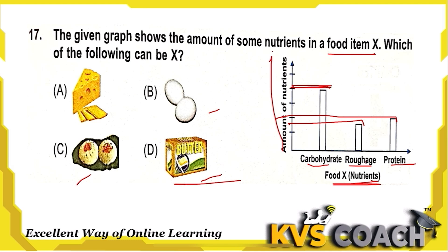Question 17: Butter has carbohydrates; egg has fats or protein; cheese has fats and protein. Looking at food X — idli — idli is made from rice flour, semolina, or urad dal, and is rich in carbohydrates, protein, and roughage. All three nutrients are present in it, so option C — idli — is the correct answer for food X.